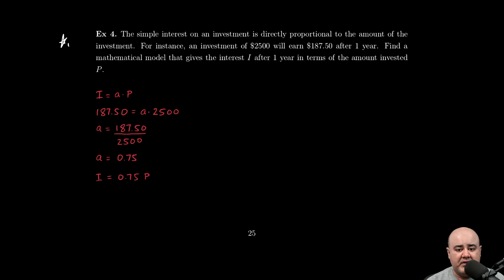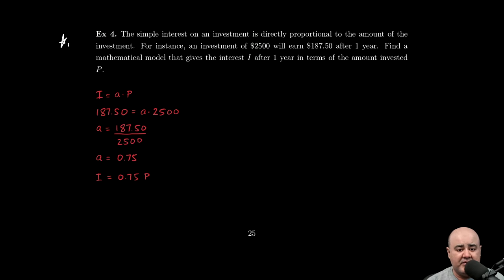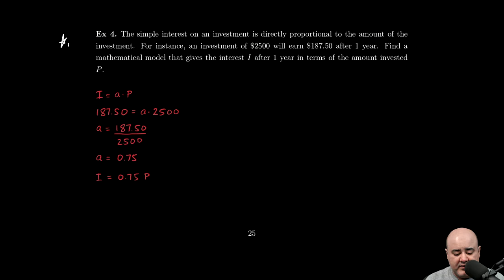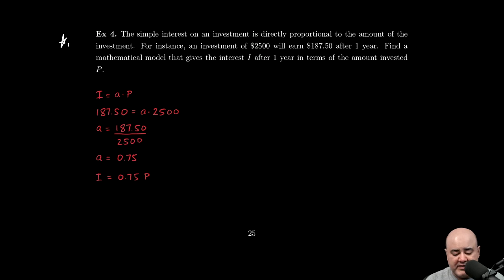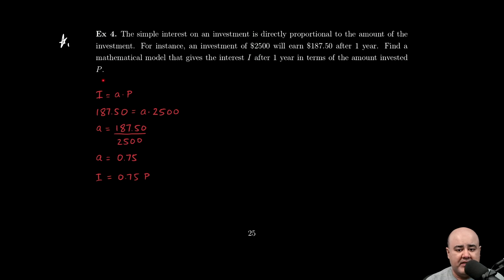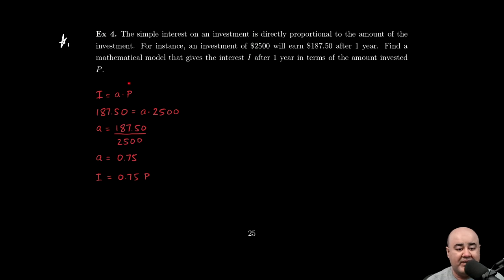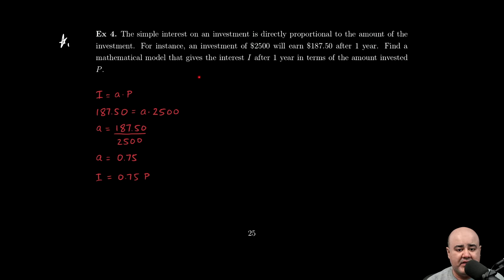Find a mathematical model that gives the interest I after one year in terms of the amount invested P. In this case, we don't have to label our variables because we're given what the unknowns represent. We're told that the interest is I and the amount invested is P. We have to use them—we cannot use x and y here.